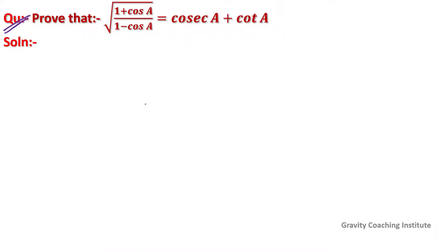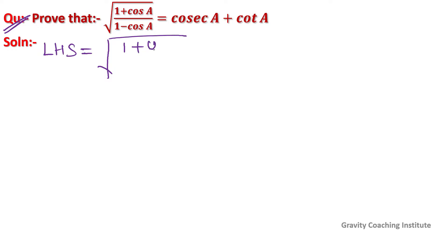Question: prove that root under (1 plus cos A) upon (1 minus cos A) equals cosec A plus cot A. First of all we write its LHS, so LHS is equal to root under (1 plus cos A) upon (1 minus cos A).